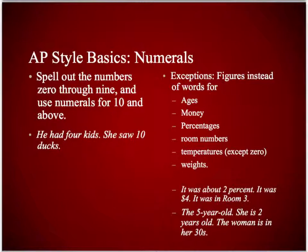For numerals in general, the blanket rule with many exceptions is that you spell out any number under 10, including zero. However, there are a lot of exceptions. Ages are always numerals. Money, percents, room numbers, temperatures, and weights are always numerals. Doing the wrong application of the rule is just as bad as not doing the rule at all.